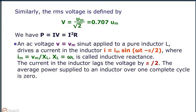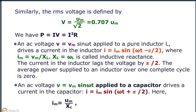An AC voltage V equals Vm sin ωt applied to a pure inductor L drives a current in the inductor I equals Im sin (ωt minus π/2), where Im equals Vm by XL. XL equals ωL is called inductive reactance. The current in the inductor lags the voltage by π/2. The average power supplied to an inductor over one complete cycle is zero.